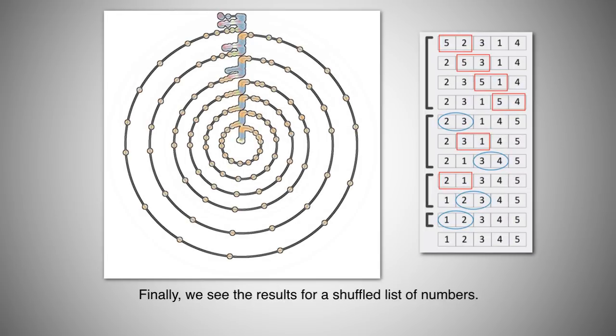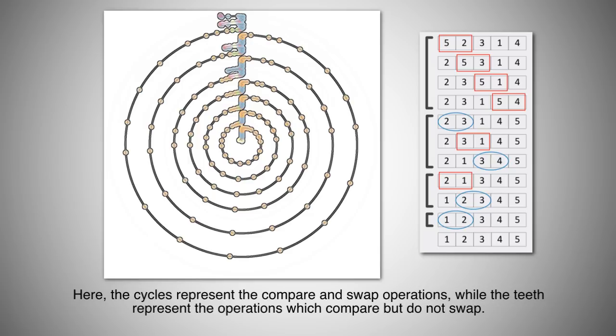Finally, we see the results for a shuffled list of numbers. Here, the cycles represent the compare and swap operations, while the teeth represent the operations which compare but do not swap.